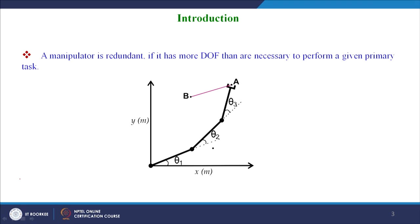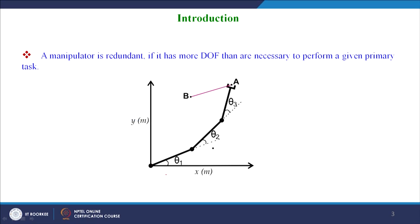Coming to the introduction, a manipulator is said to be redundant if it has more degrees of freedom than it is necessary to perform a given task. For example, the given manipulator has three degrees of freedom — the first revolute joint, the second revolute joint, and the third revolute joint — where the independent coordinates are theta 1, theta 2, and theta 3. The task is to track a trajectory between point A and B. This trajectory in Cartesian space is a two-dimensional trajectory, whereas the degrees of freedom of the manipulator is 3. Thus there is a mapping from three degrees of freedom joint space to two degrees of freedom Cartesian space.